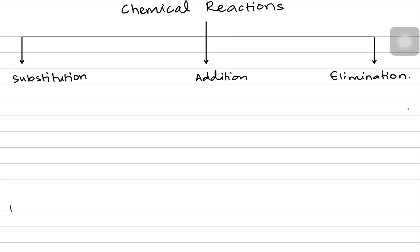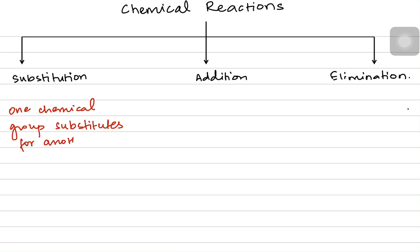In a substitution reaction, one chemical species or one chemical group substitutes for another. For example, if A had a bond with B, and C wants to make a bond, what happens is that A then makes a bond with C and B is left alone. That is a substitution reaction.